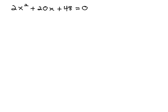In this video, we're going to look at how we can solve the equation 2x squared plus 20x plus 48 equals 0 using a method known as completing the square.